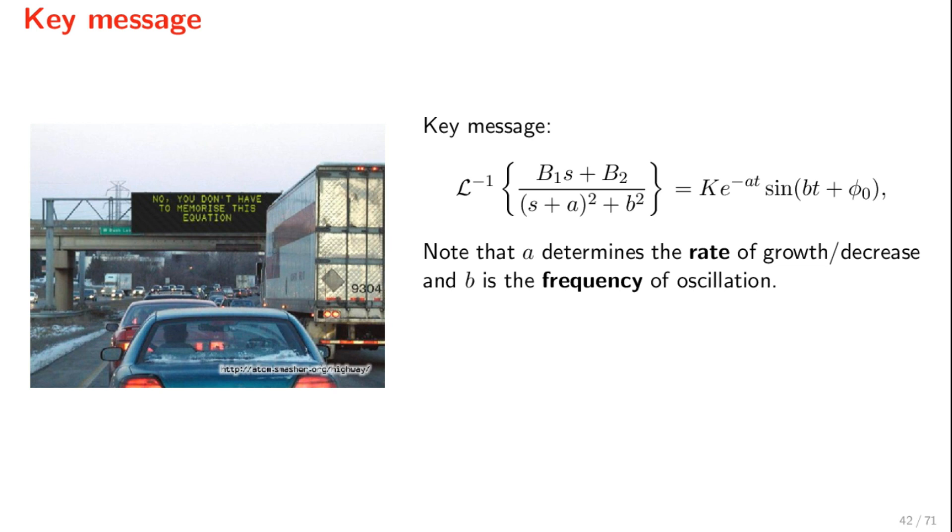It is not important that you memorize this formula. The key message here is that a determines the rate of growth of the time domain function, and b determines the frequency of oscillation. Poles with a larger imaginary part will lead to a higher frequency function. Poles with a negative real part will produce functions that converge to zero, whereas poles with a positive real part will produce divergent and unbounded inverse Laplace transforms.